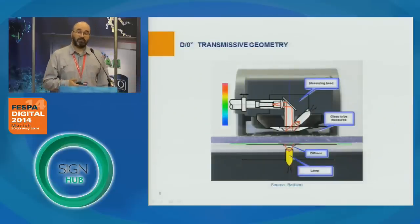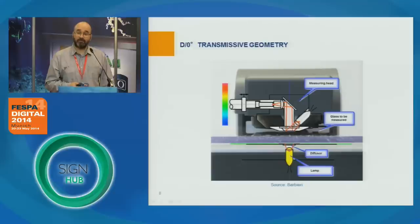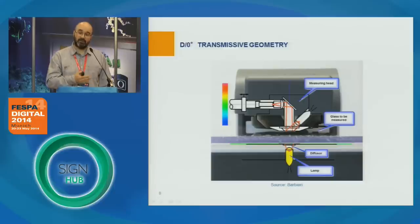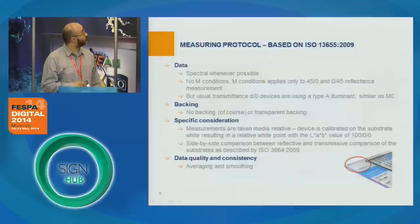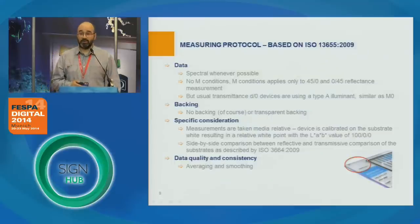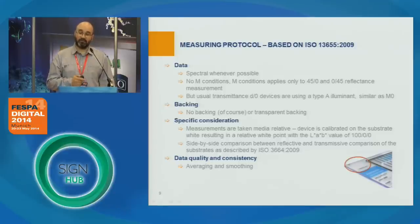This is how a D0 transmission geometry looks. We have a lamp, and on top of the lamp there is a diffuser that scatters the light. Between this diffuser and the measurement head is the sample we are going to measure. The rest is identical to any 45-0 geometry optical instrument. Getting back to our measurement protocol, this is based on ISO 13655 from 2009, which specifies how D0 transmission measurement should take place.